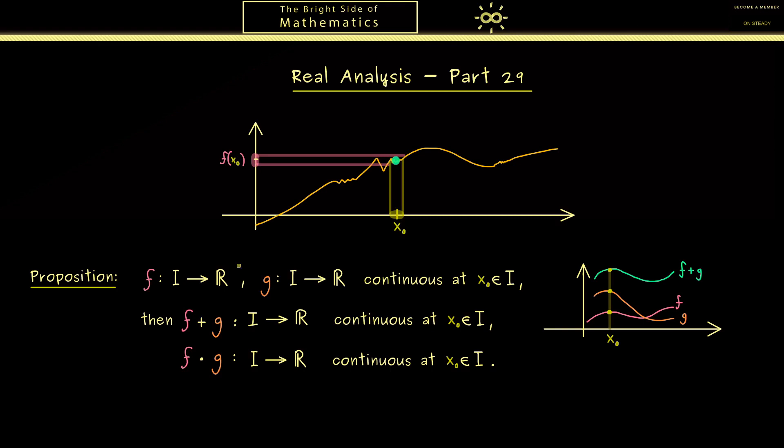Now I can tell you this is very simple to prove if you use the sequence definition for the continuity. Because then you just need to use the already known limit theorems. And then you might already recognize we can prove the same thing for the quotient of both functions.